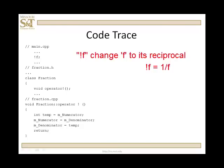The definition: I'm going to make it a member function. It's going to return nothing. Its name is operator bang, or operator exclamation point. Because it's unary and a member, it has no parameters. I have to scope it as a fraction operator function. It returns nothing. I'm going to create a temporary int and assign the numerator to it, assign the denominator to the numerator, and assign temp to the denominator.